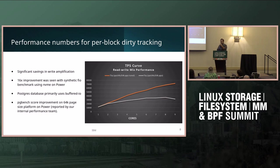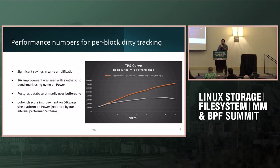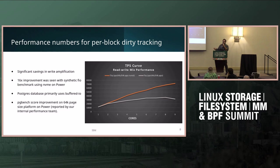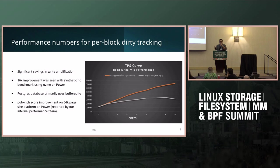Here is a performance chart shared by an internal performance team using PGBench as a benchmark — a mixed read-write workload. The x-axis shows the number of threads and the y-axis shows IOPS per second. As you increase the number of threads, performance was not scaling well because you were reaching the max throughput capacity of the device, resulting in write amplification rather than serving user IOPS. With the per-block dirty tracking feature merged, you can now see scalability going well. This was on a 64K page-size system, but with large folios this can be a common problem for others as well.